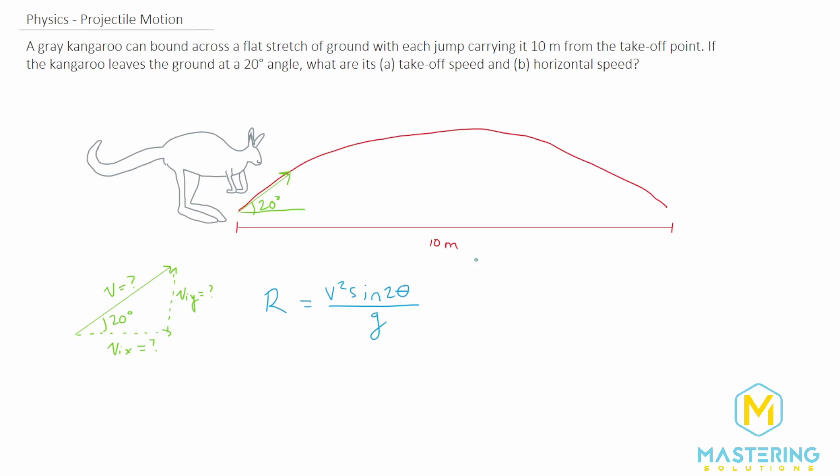So the range in this case will be the 10 meters. We want to solve for velocity, so let's rearrange this for v. So we'll first multiply both sides of the equation by g. So now we have g times r is equal to v squared sine 2 theta, and then we'll divide both sides by sine 2 theta.